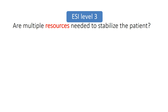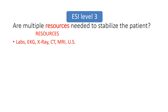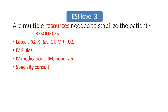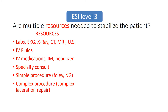Your Level 3 patients are almost stable, but need at least two or more resources to remain stable. These are the things that are considered resources that the ED provides. If your patient needs at least two of these resources to remain stable, then they are considered Level 3. Here's a list of your resources: labs, EKG, x-ray, CT, MRI, ultrasound, IV fluids, IV meds, nebulizer, specialty consult, simple procedures such as a Foley or an NG tube, or complex procedures such as a complex laceration repair.